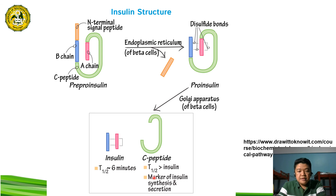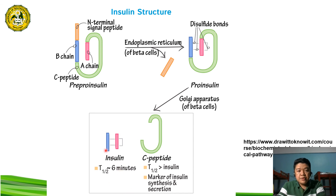Comparing the half-life of insulin and C peptide: insulin has a shorter half-life of about six minutes in the blood, while the C peptide has a longer half-life of about 30 minutes. The C peptide is used as a marker of insulin synthesis and secretion. In terms of biological activity, the C peptide has negligible biological activity compared to insulin, which is the major hormone important for regulation of blood glucose.